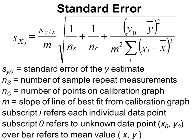Just a quick word on errors. In order to get the standard error for that x0 value, to get the standard error for our concentration, we have to implement the formula that is shown here. It includes different aspects such as the standard error of the y estimate, that's our Sy/x here. We've got the number of repeat measurements that were made for our unknown sample, the number of points on the calibration graph. The gradient or slope of the line of best fit is also used in two different places within this equation.